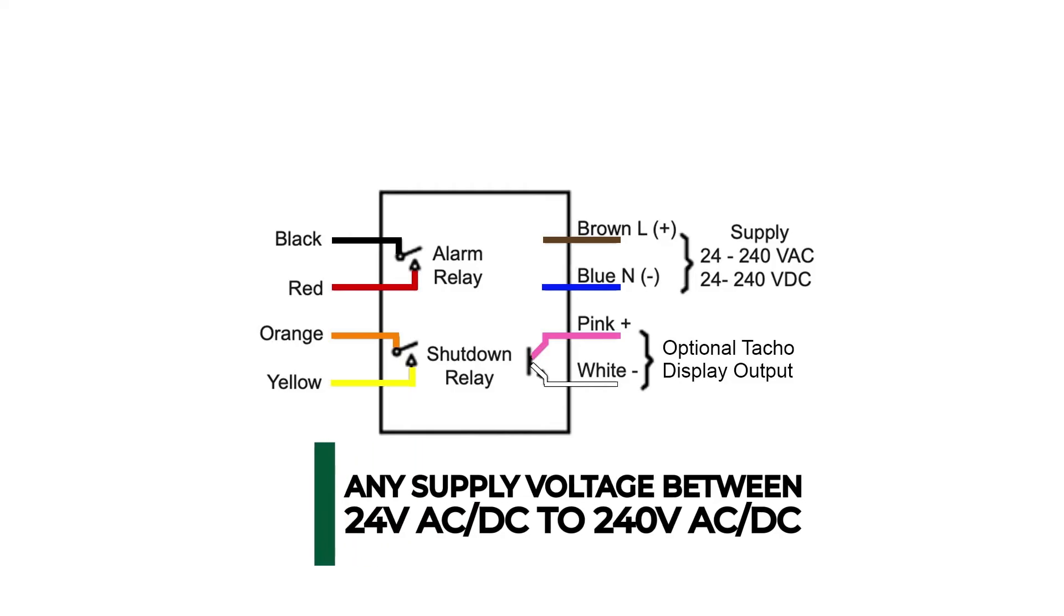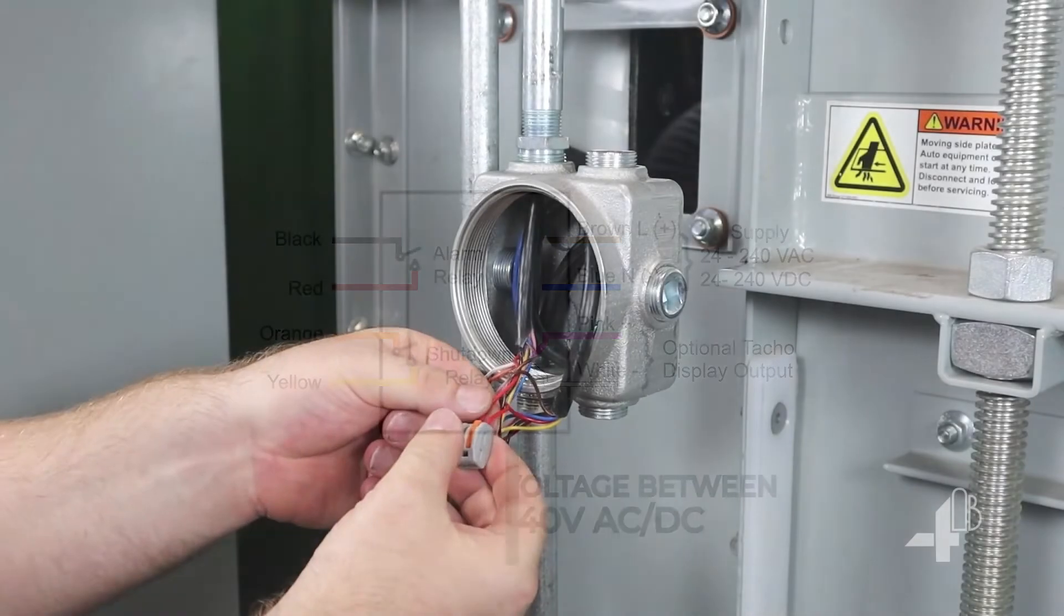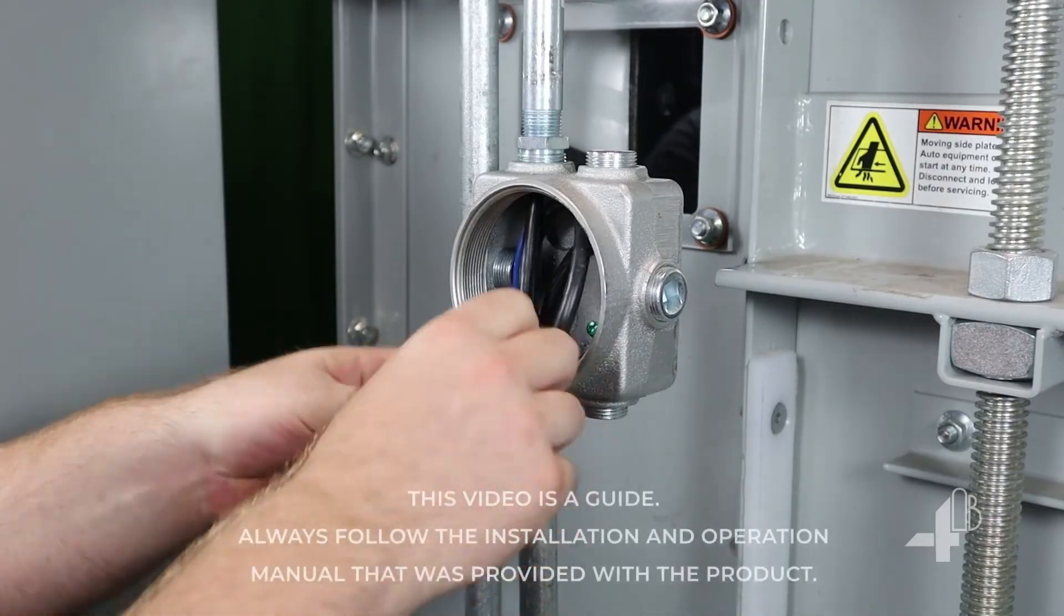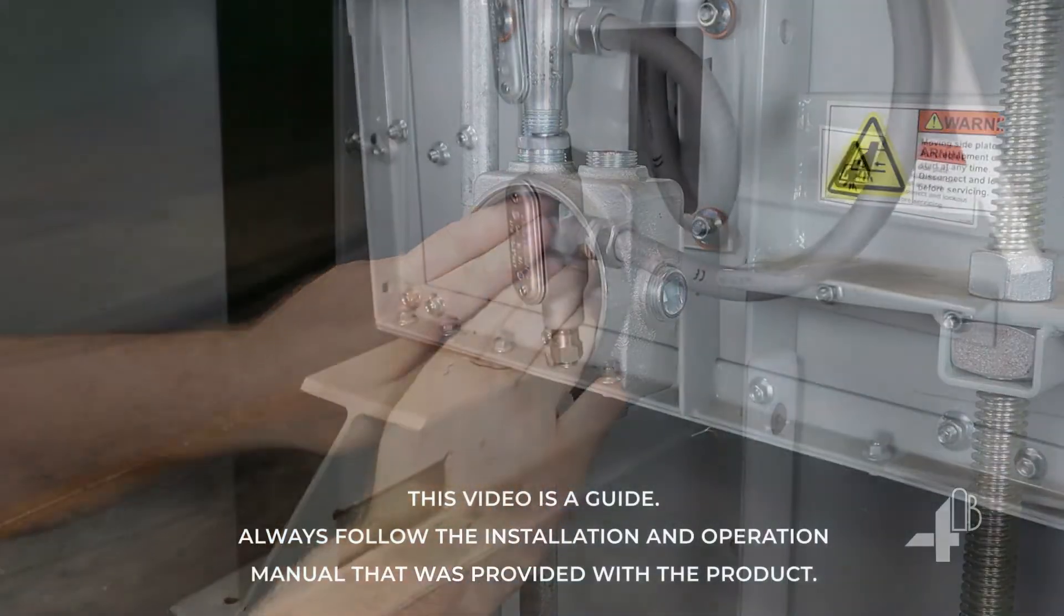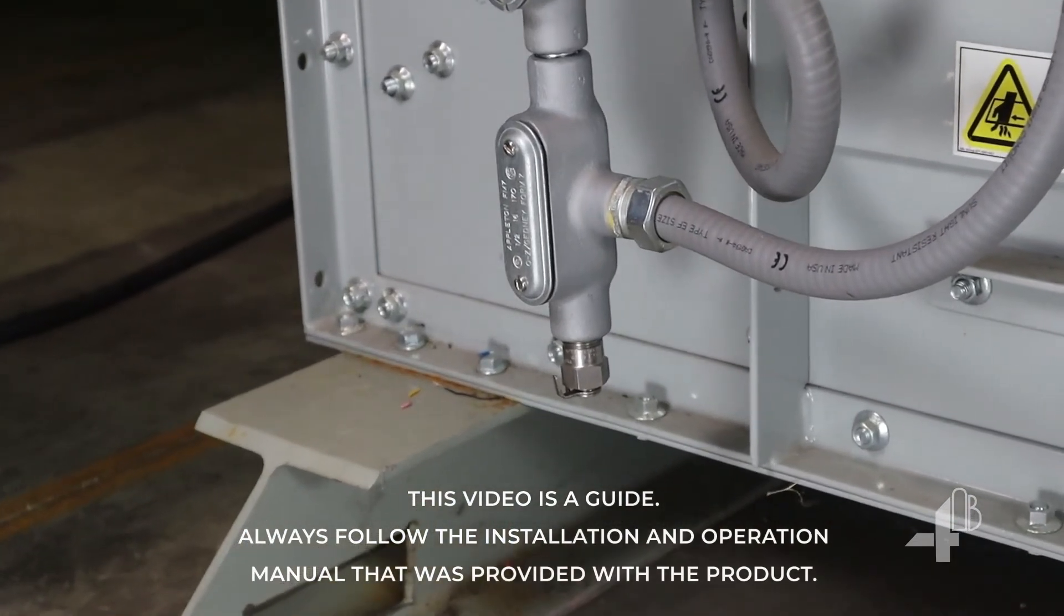The supply power can be 24 to 240 volt AC or DC. Most applications use a flexible seal tight and rigid conduit to protect the cable. Use a low point conduit drain in case any moisture accumulates in the piping.